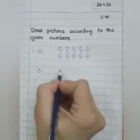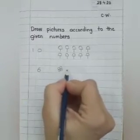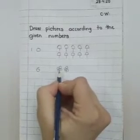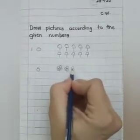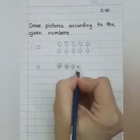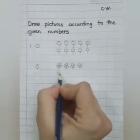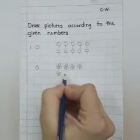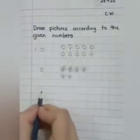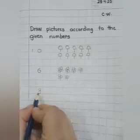The next number we are going to write is number 6, and we are going to make 6 flowers. 1, 2, 3, 4, 5, and 6.